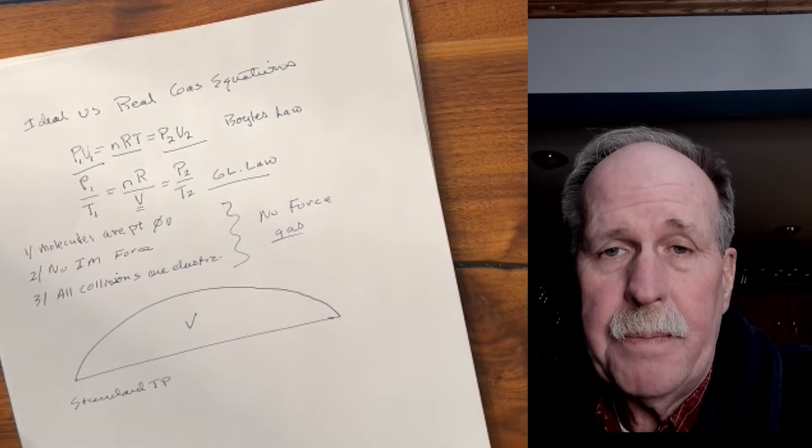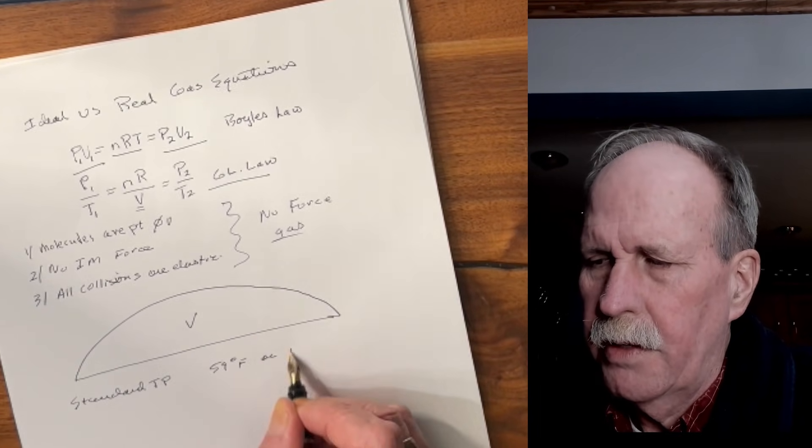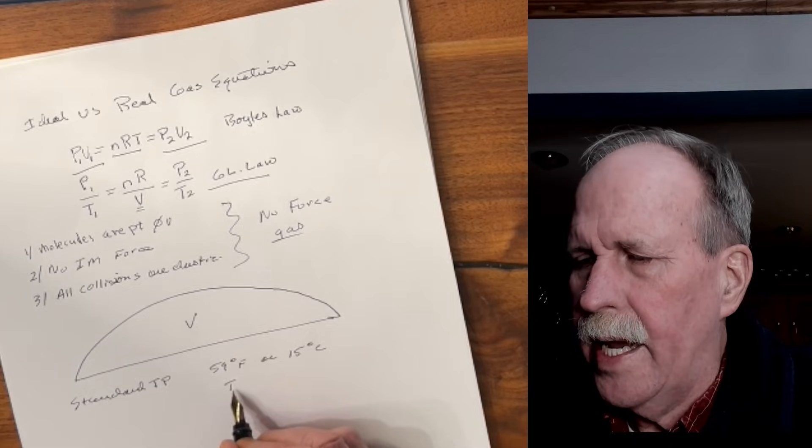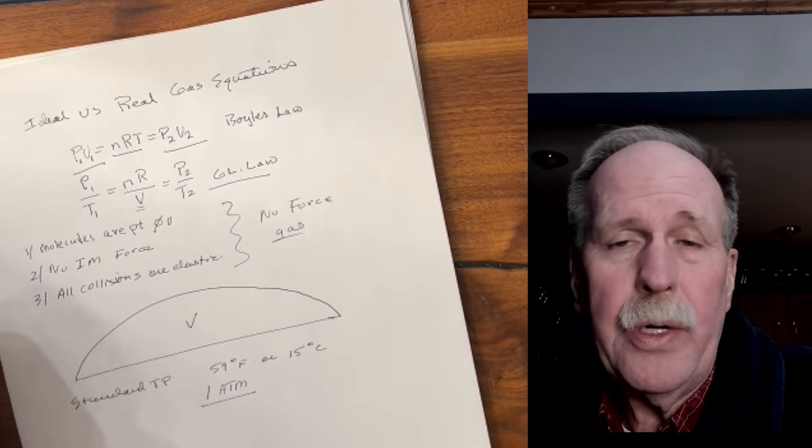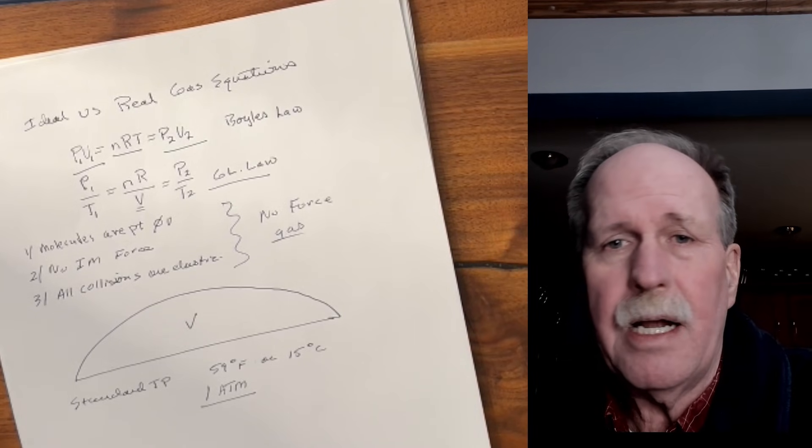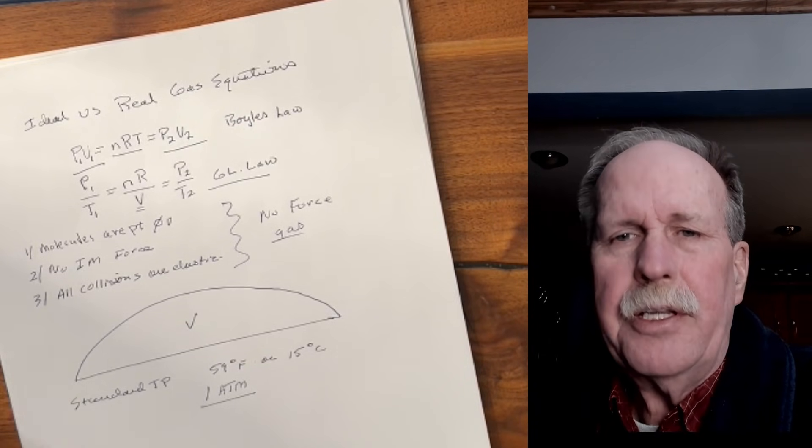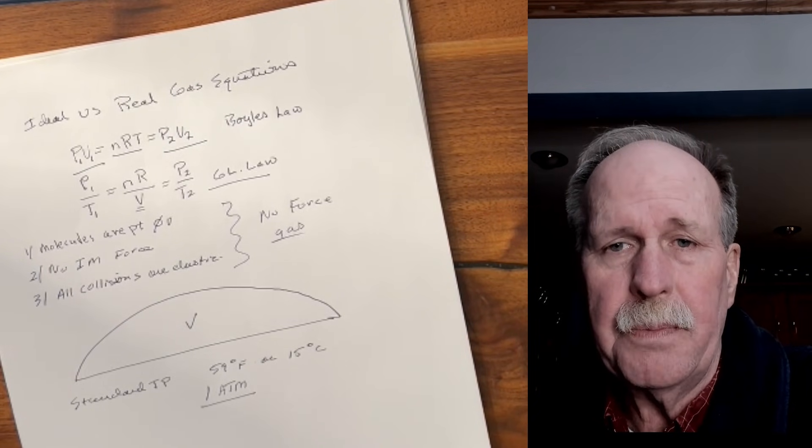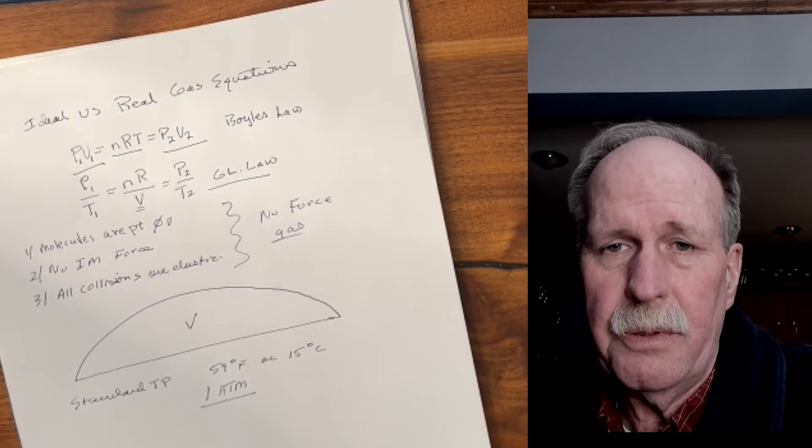So standard temperature and pressure for the atmosphere when it comes to doing aviation is a temperature of 59 degrees Fahrenheit, or 15 degrees Celsius, and a standard pressure. Well, you can take your pick. We'll just call it one atmosphere. One atmosphere equals 29.92 inches of mercury, equals 760 millimeters of mercury, equals about 101 kilopascals, or about 101,000 pascals. You can use whatever unit you're comfortable with. Just keep your units consistent throughout this entire equation.